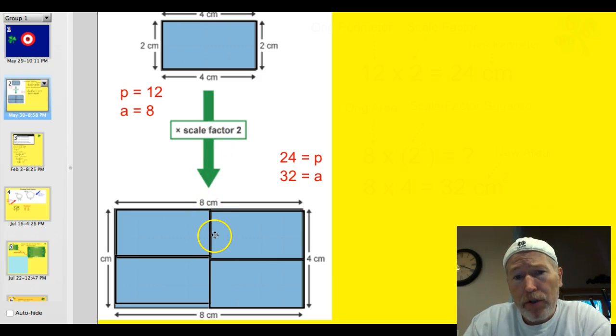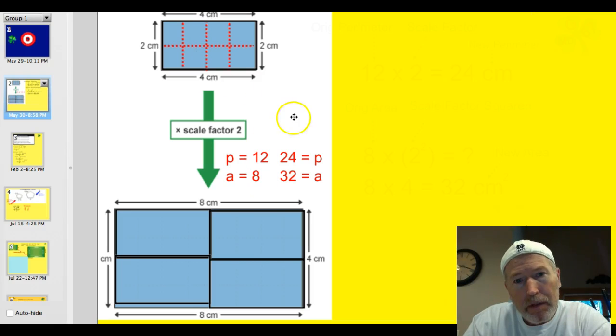This is a scale factor of 2. And if you take a look at the measurement of the perimeters, you're going to notice something. The original perimeter of this rectangle was 12. Now, the perimeter of the rectangle that is twice as big is 24. You'll notice that the perimeter doubled. Scale factor was 2. The perimeter doubled. You'll notice that the area of the original was 8. You'll notice that the area of the new one is 32. But before I click and show the red lines, look at it. It's exactly 4 times as large.